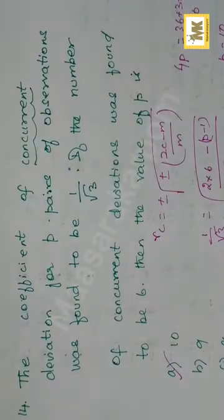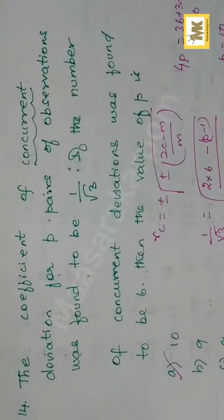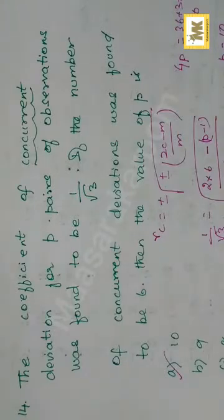Next, question number 14. The coefficient of concurrent deviation for p pairs of observation was found to be 1 by root 3. If the number of concurrent deviations was found to be 6, then what is the value of p?